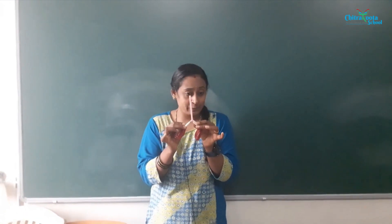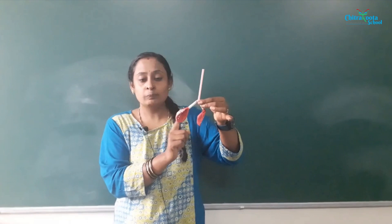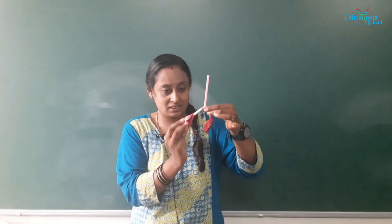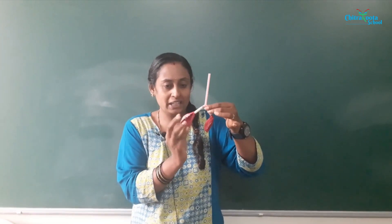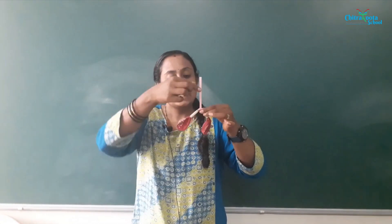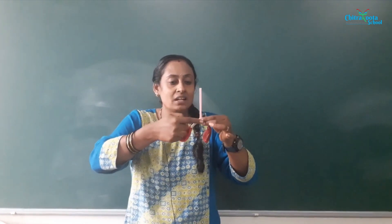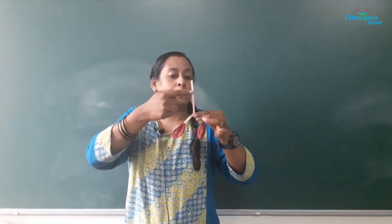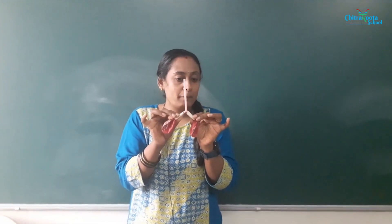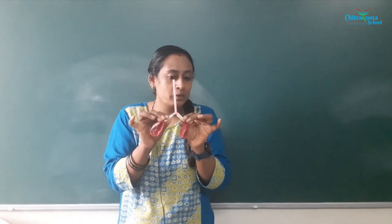We are doing the model of the respiratory system. These balloons represent the lungs — these two balloons will represent the lungs, and this one will represent the windpipe or trachea. These are the branches that come out of the windpipe.